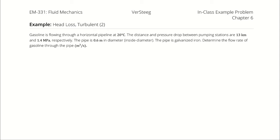Gasoline is flowing through a horizontal pipeline at 20 degrees Celsius. The distance and pressure drop between pumping stations are 13 kilometers and 1.4 megapascals respectively. The pipe is 0.6 meters in diameter (inside diameter) and is made out of galvanized iron. Determine the flow rate of gasoline through the pipe in cubic meters per second.